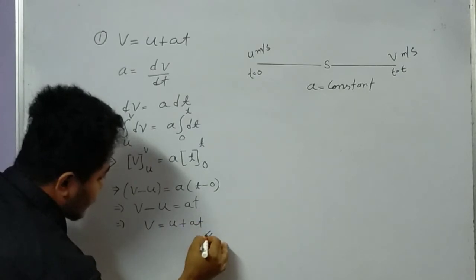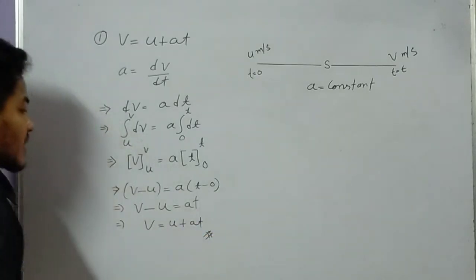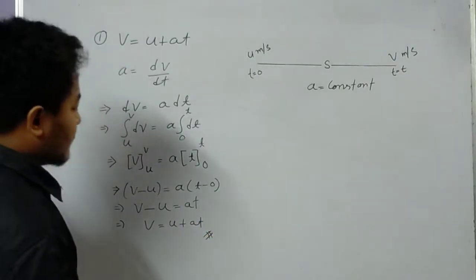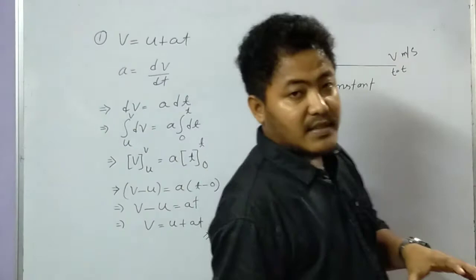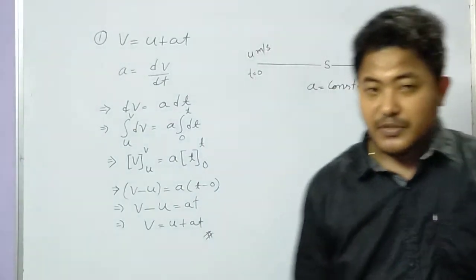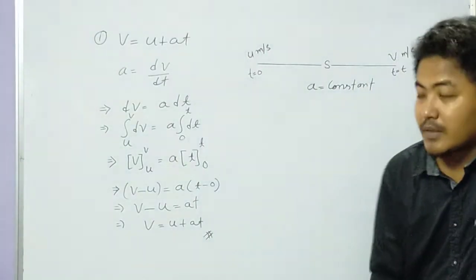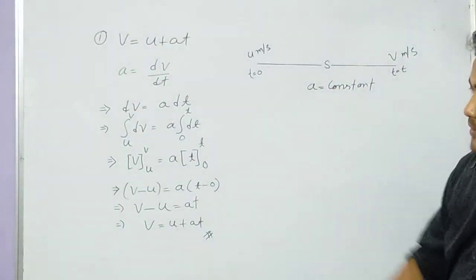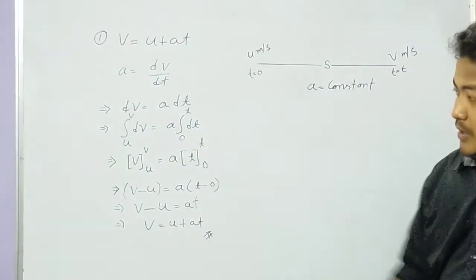Finally we get v - u = at, or v = u + at. This completes the proof of the first kinematic equation by calculus method. Please note it down.